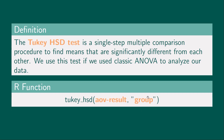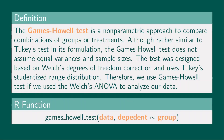The group argument inside the quotation mark is the grouping variable. The Games-Howell post hoc test is a non-parametric approach to compare combinations of groups or treatments. Although rather similar to Tukey tests in its formulation, the Games-Howell test does not assume equal variances and sample sizes. The test was designed based on Welch degrees of freedom correction and uses Tukey studentized range distribution. Therefore, we use the Games-Howell test if we use the Welch ANOVA to analyze our data.